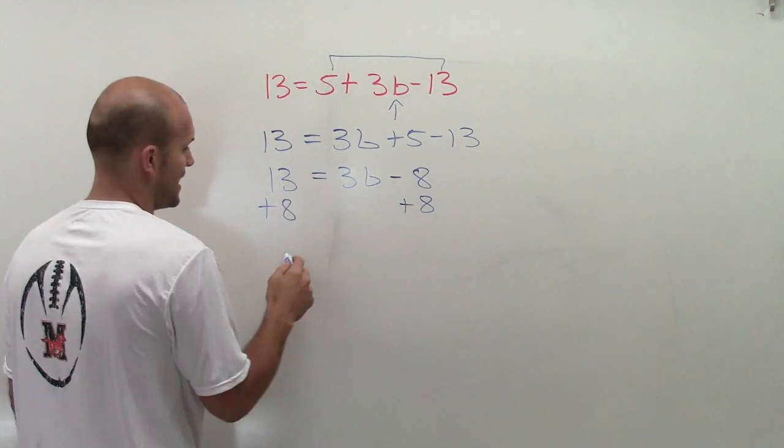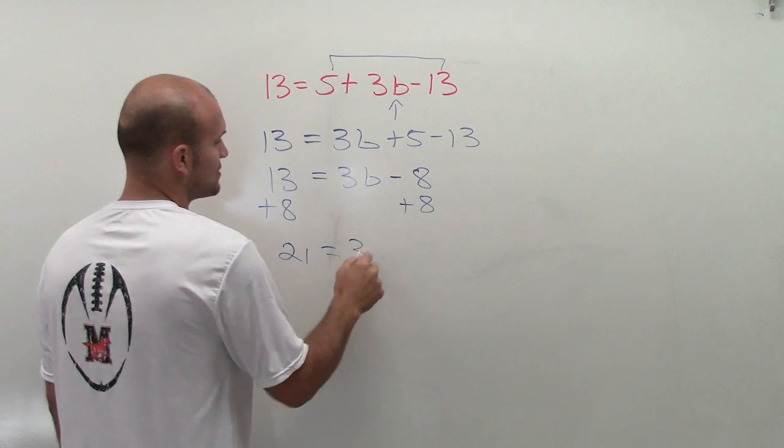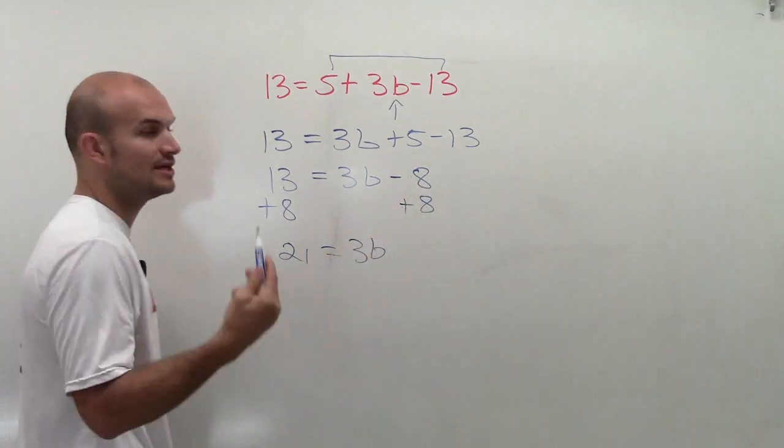Now, I'm going to have 21 equals 3b, as negative 8 plus 8 goes to 0. 0 plus 3b is 3b.